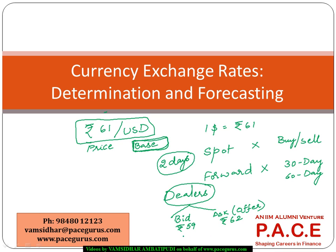The dealer is willing to pay 59 rupees to purchase a dollar, but will charge 62 rupees to sell a dollar to you. The difference — three rupees in this case — is called the bid-ask spread. The bid and ask prices are always from the perspective of the dealer: bid is the dealer's buy price and ask is the dealer's sell price.